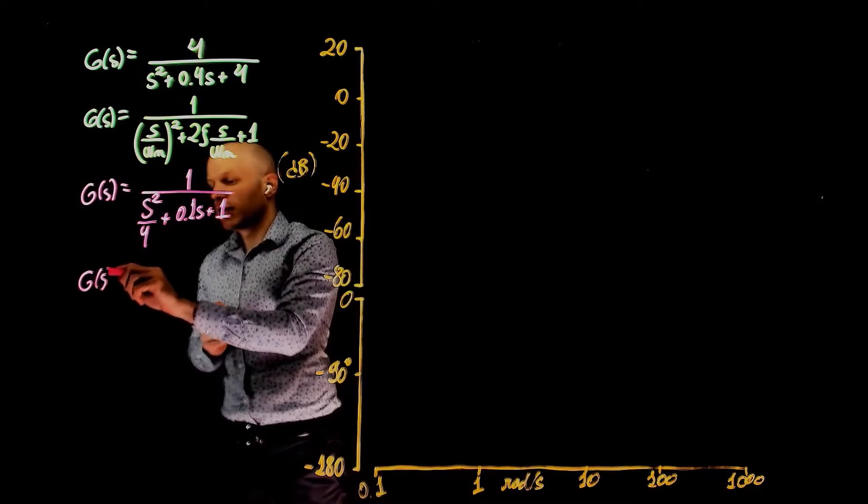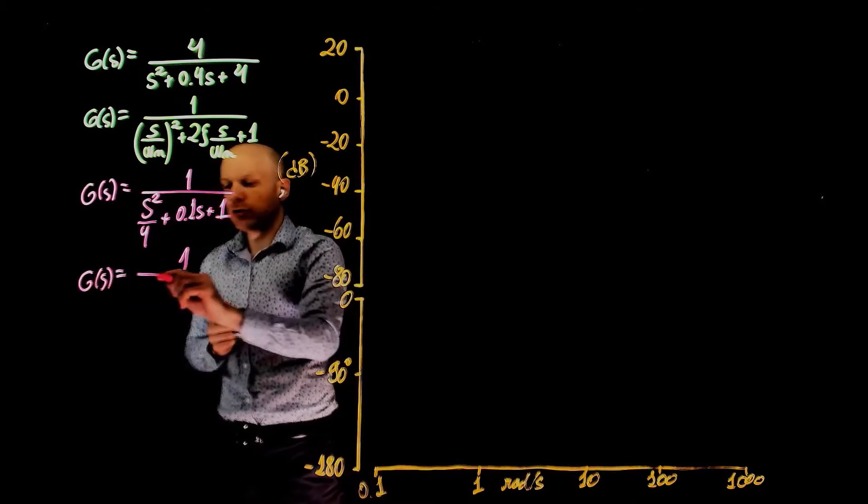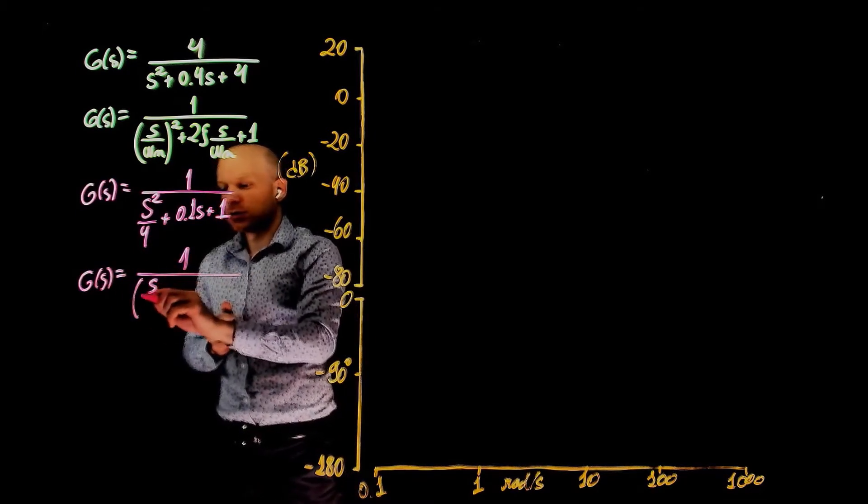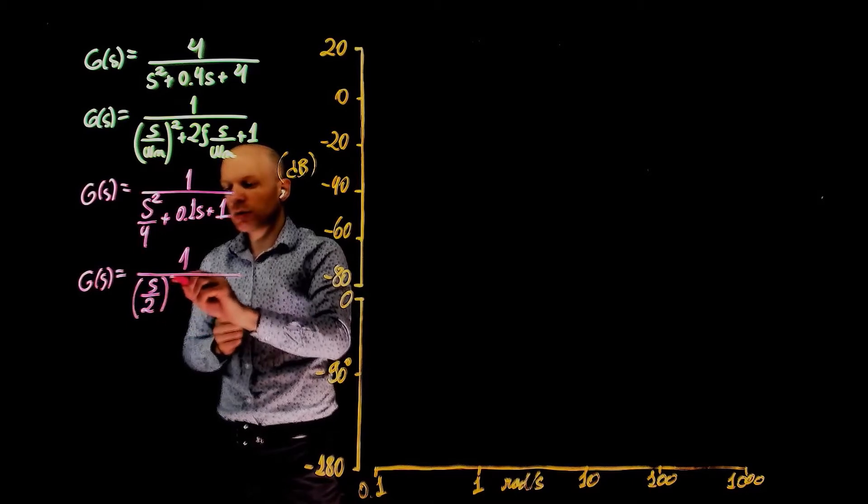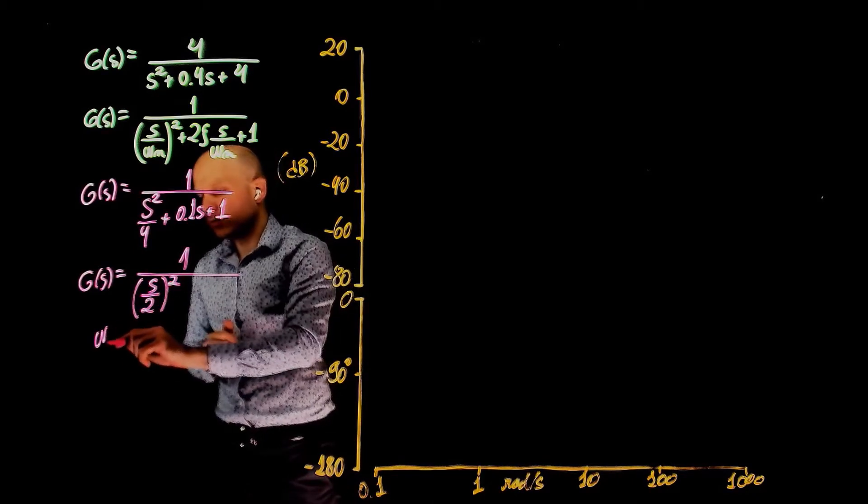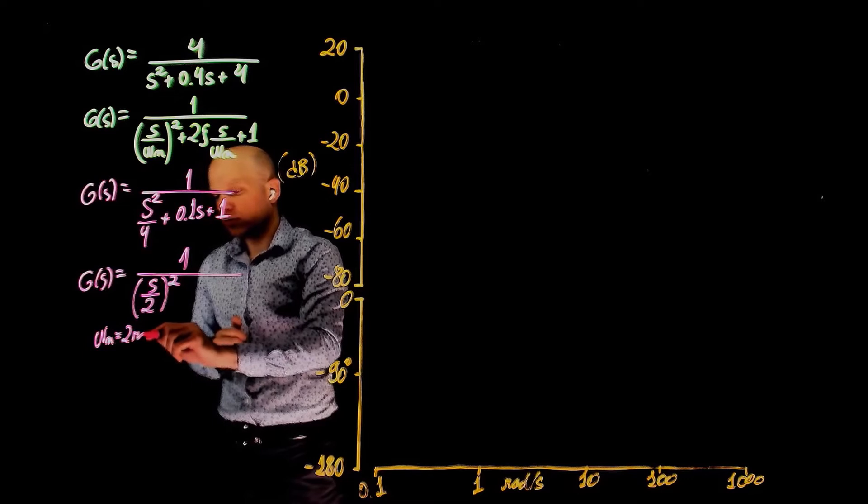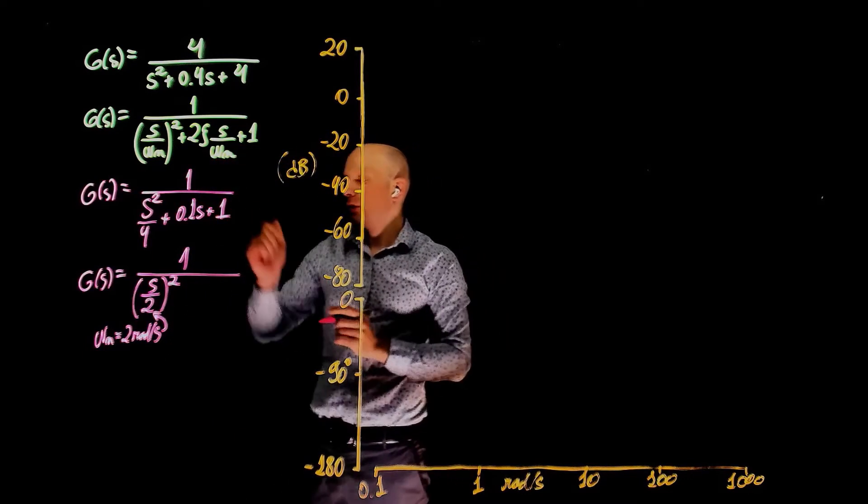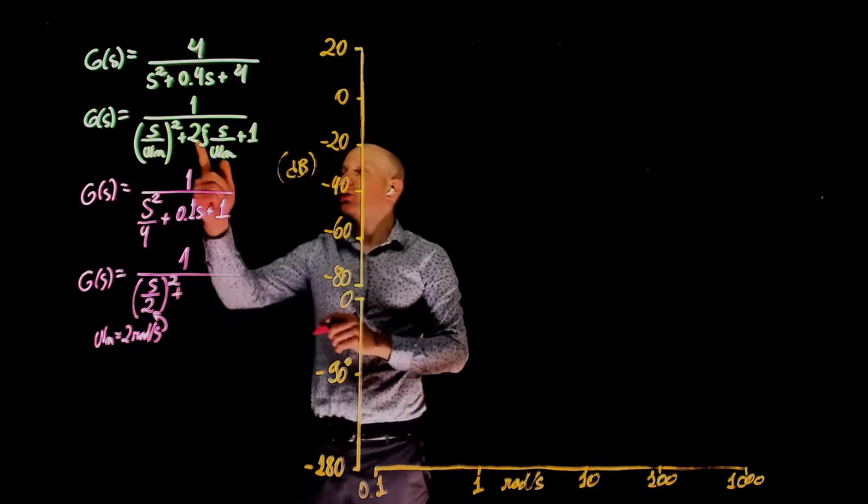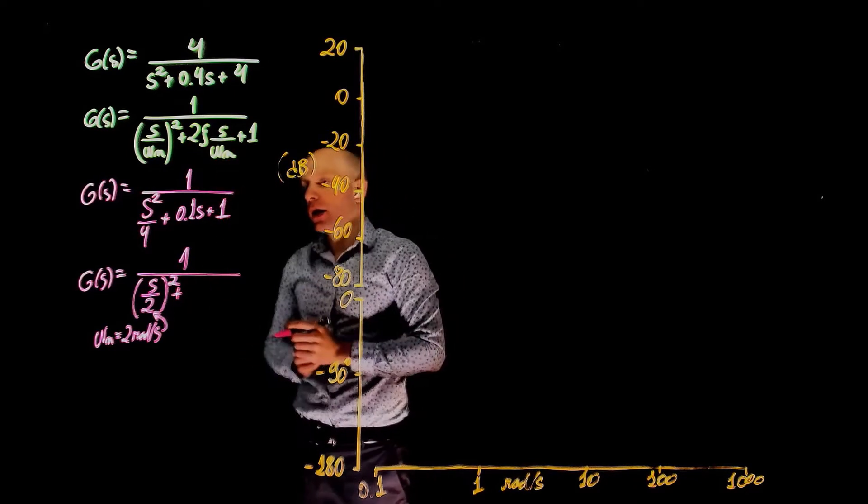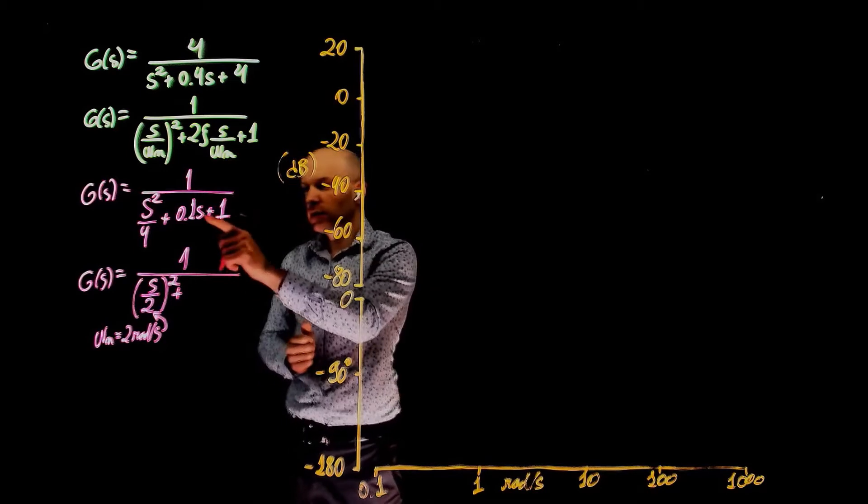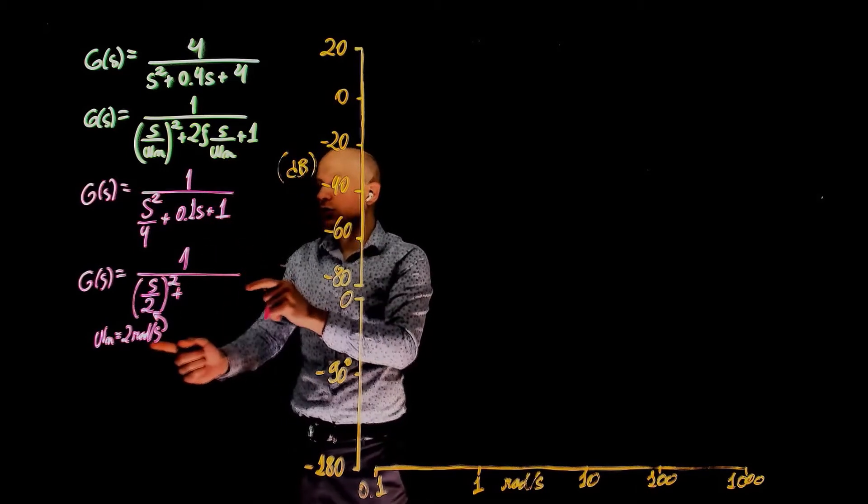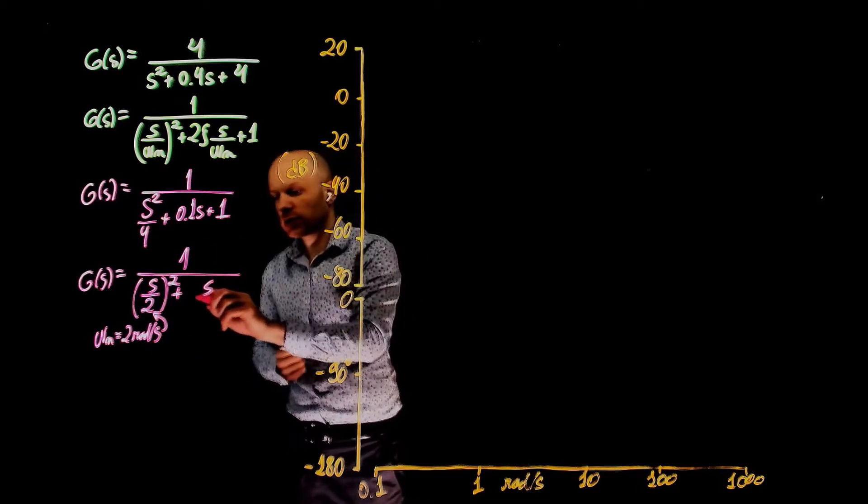So clearly this is G of s equals to 1 over s over 2 squared. So here is our omega n. And now we need plus 2 zeta s divided by omega n. So s here needs to be divided by omega n, which is 2.